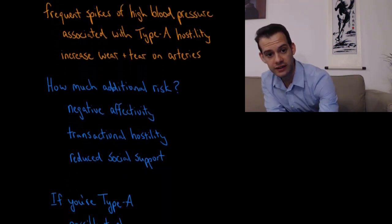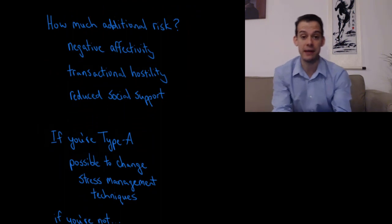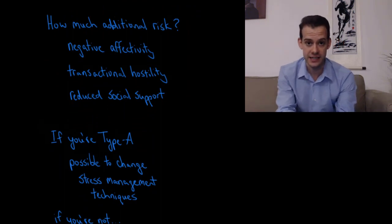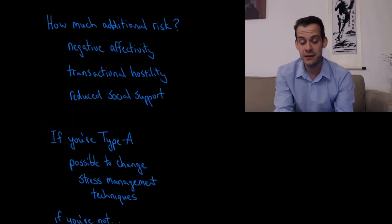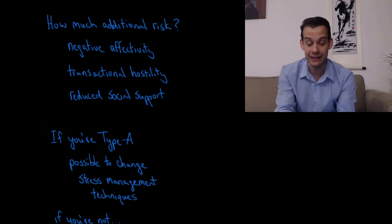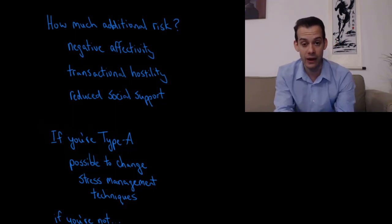So how much additional risk do we have from type A personality? Well, it's tough to say because there's a number of factors involved. Now one of these might be that people with type A are more angry and hostile, and this means that they have more negative affectivity, more negative emotion, and this might be playing a role.